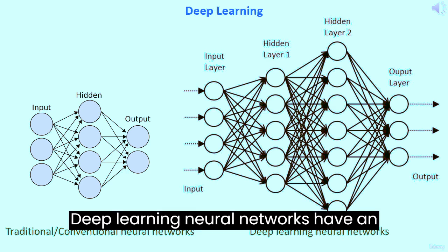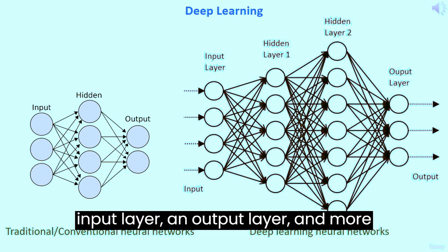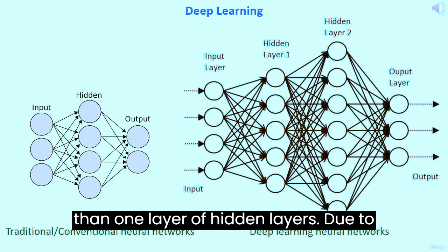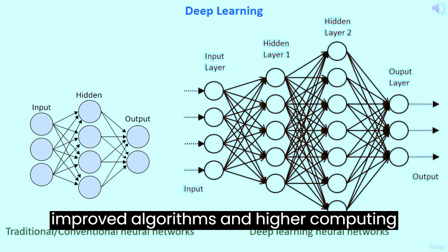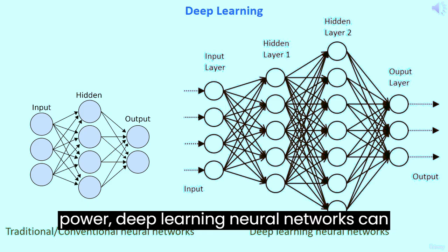Deep learning neural networks have an input layer, an output layer, and more than one hidden layer. Due to improved algorithms and higher computing power, deep learning neural networks can have more than one hidden layer.